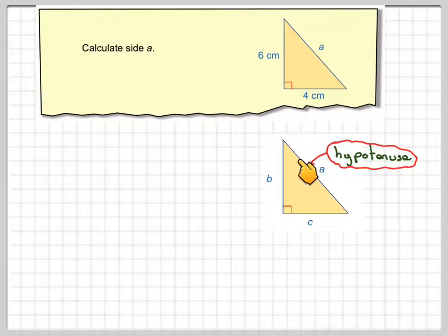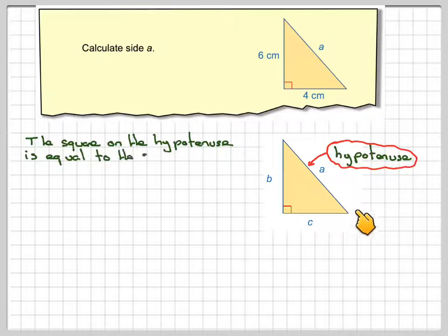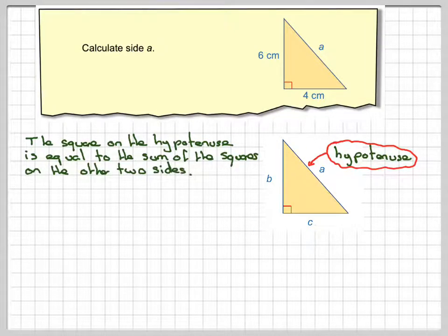And this is the longest side of the triangle, which is called the hypotenuse. The hypotenuse is always opposite the right angle. So the square on the hypotenuse, so if we were to draw a square on here, it would be equal to the sum of the squares on the other two sides.